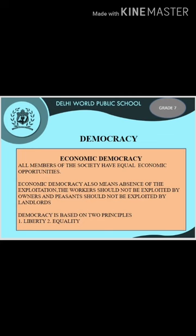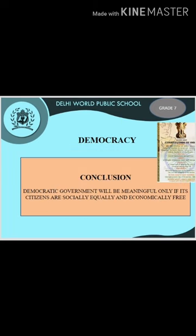There is no justice happening for Gopal and his family — they are ill-treated by the villagers and the other party men. How will Gopal and his family consider it a democratic government? For them, it is not a democratic government. They should also stand up against injustice. We conclude that a democratic government will be meaningful only if the citizens are socially equal and economically free.